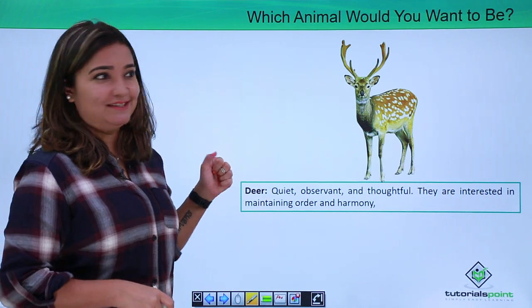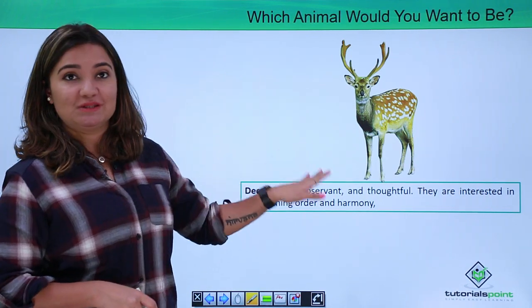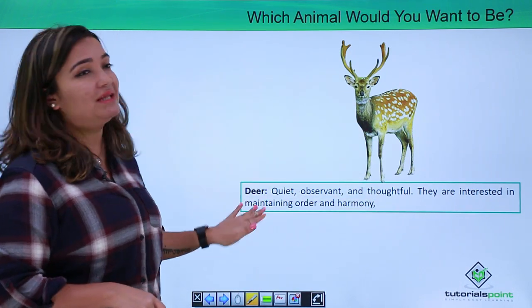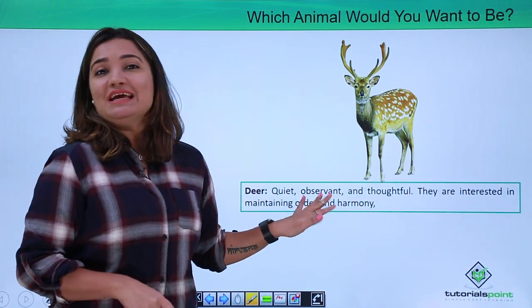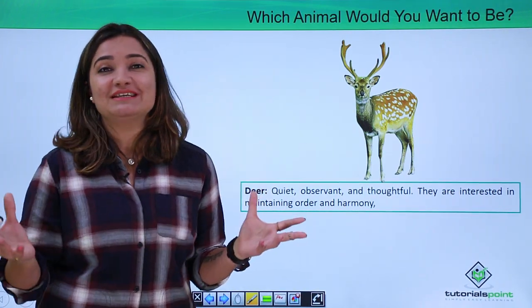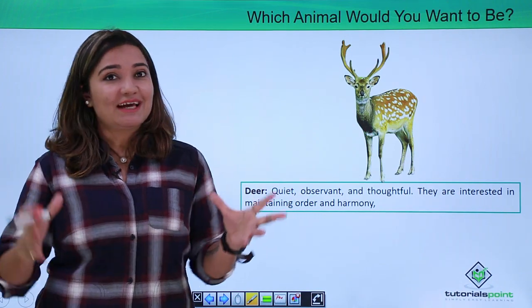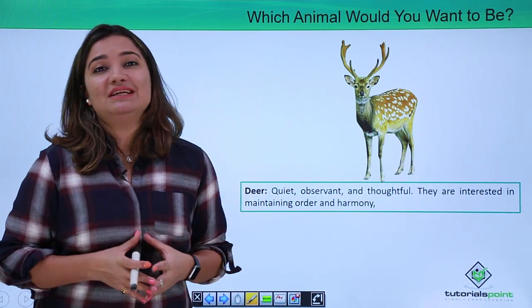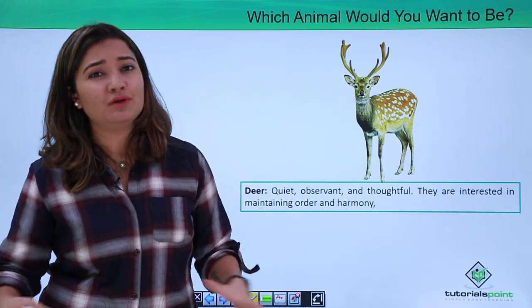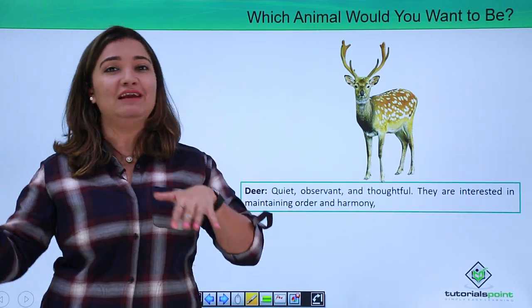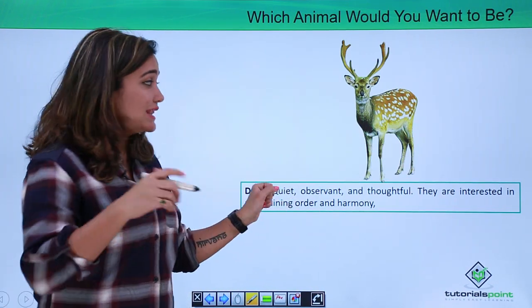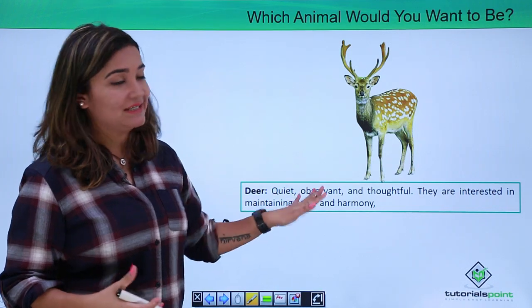How about a deer? Quite observant and thoughtful and they are interested in maintaining order and harmony. If deer is your choice, probably you are the most peaceful person or that kind of a person who definitely doesn't want to create any controversies around.